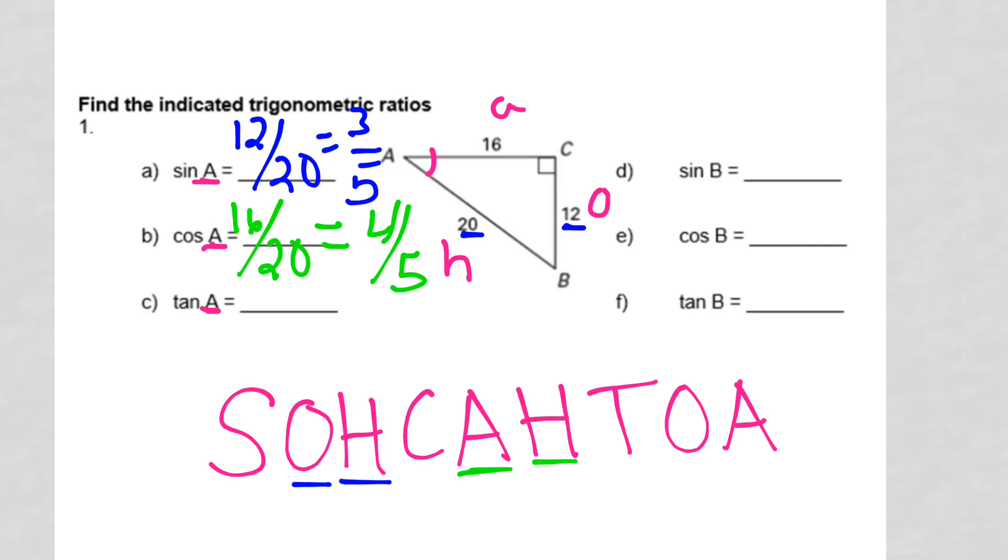The last one, tan of A, is going to be opposite over adjacent. So 12 over 16, which is also reducible to 3 over 4.